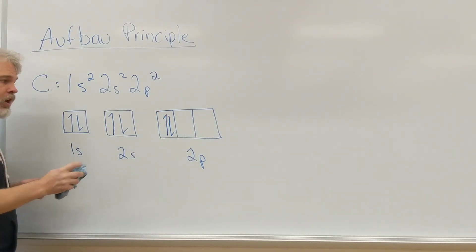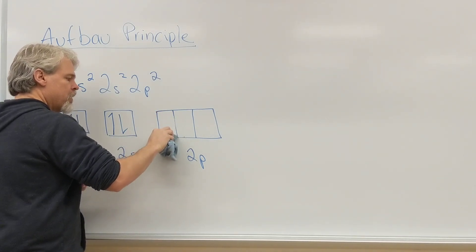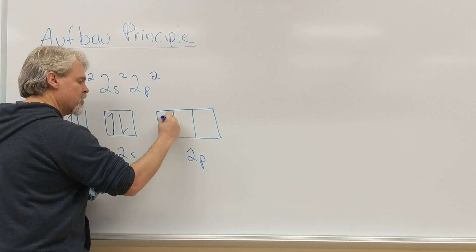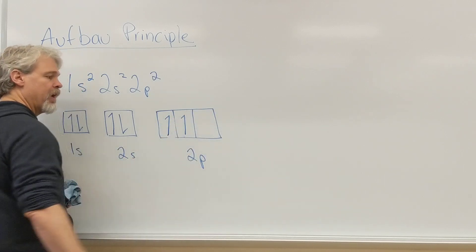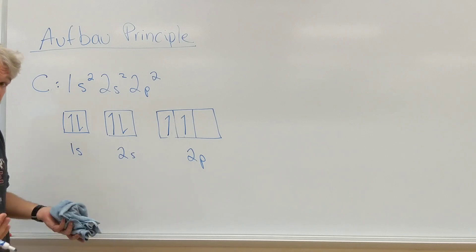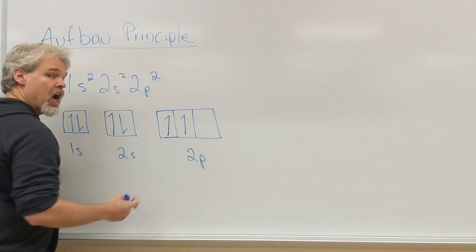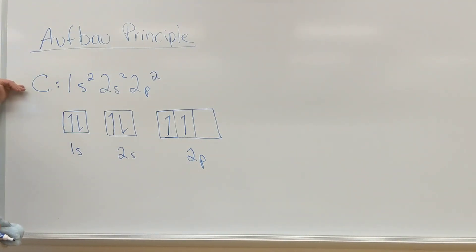Experimentally, we know that the lowest energy comes from the configuration that has those two electrons unpaired. And since nature always likes to assume the lowest energy configuration, that's going to be our driving force. So we have now built up the configuration of carbon by starting at boron and adding one electron. And that's the Aufbau principle in a nutshell.